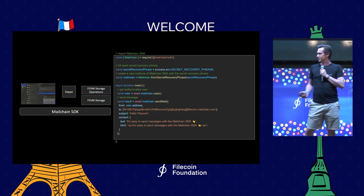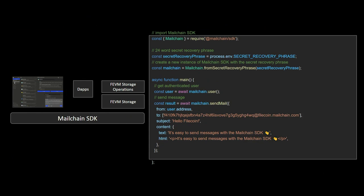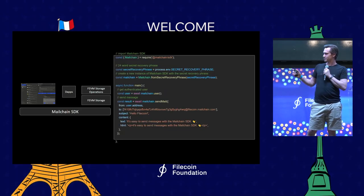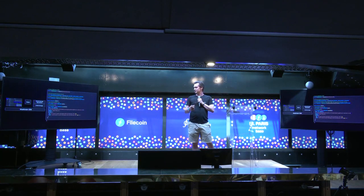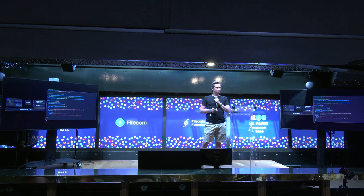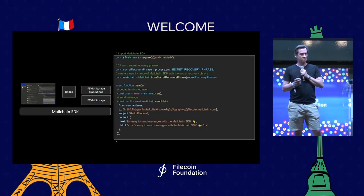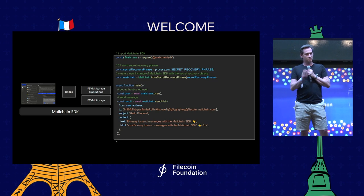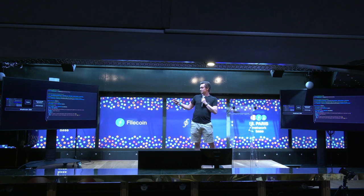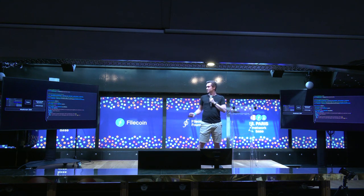Here's an example of how easy it is to write code with the SDK. If you've got a dApp that has added the MailChain SDK, in a few lines of code you install the npm package, configure it with your secret recovery phrase — running in your own hosted environment, not on the front end — then authenticate with MailChain and build up a message. All messages use the same HTML and plain text standard as regular email, so you can put this in your email pipeline and split on whether it's a MailChain address or a traditional email address.